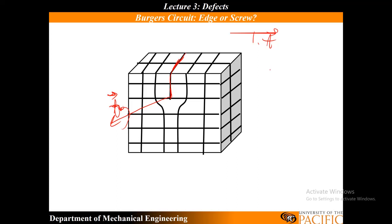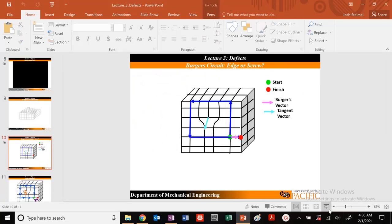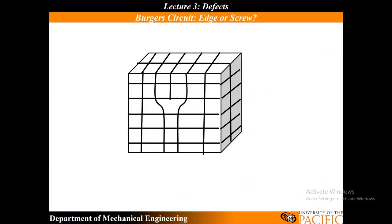When my thumb's pointed there, I need to make sure that the circuit goes clockwise in this plane. Let's go ahead and do it one more time. So this is my T vector, coming out of the board. I'm going to pick my start point right here. One of the key things when you pick your Burgers circuit — I need to make sure that I pick a large enough circuit where I enclose my dislocation, basically enclosing this extra half plane.